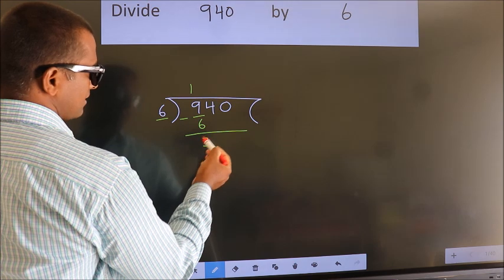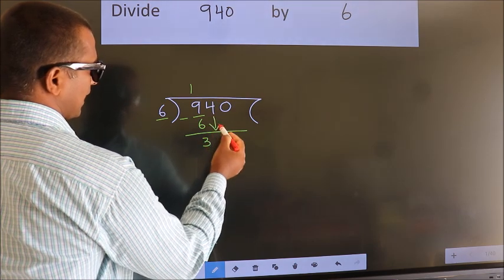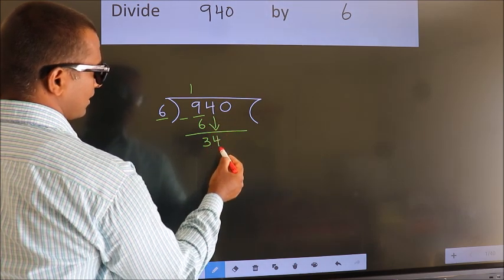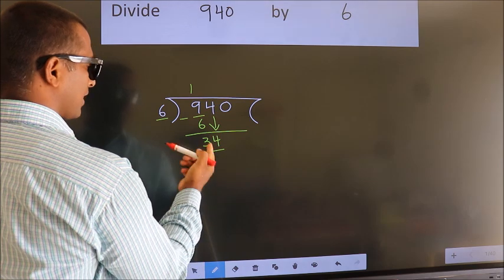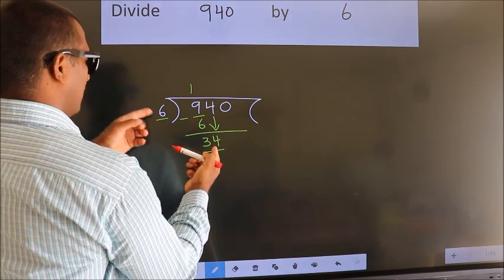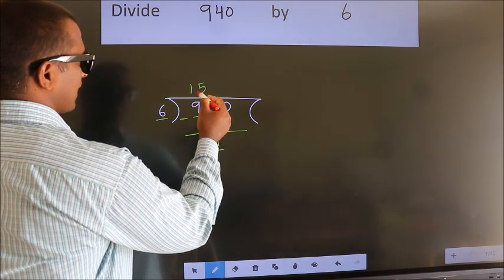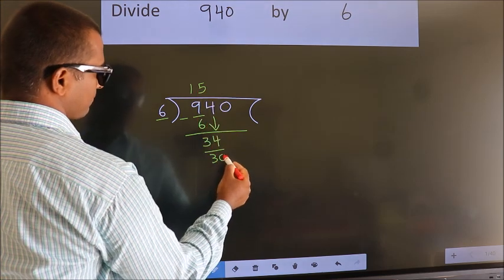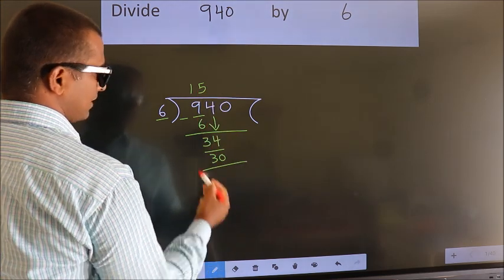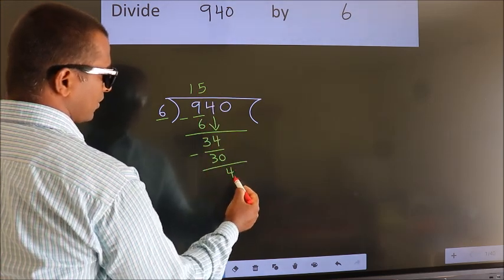After this, bring down the next number. So, 4 down. So, 34. A number close to 34 in 6 table is 6 times 5 is 30. Now we subtract. We get 4.